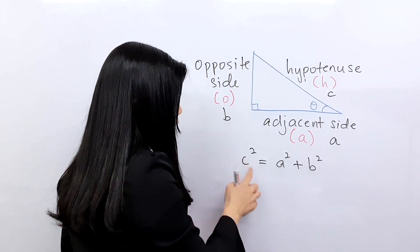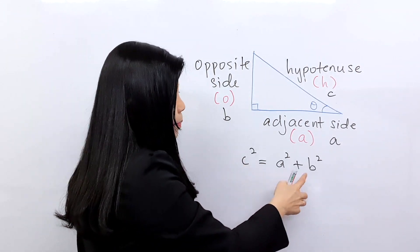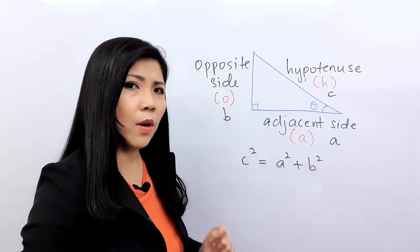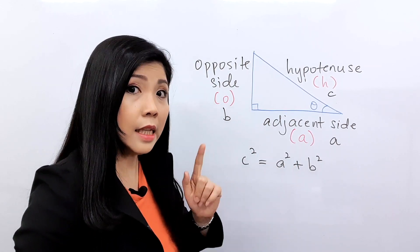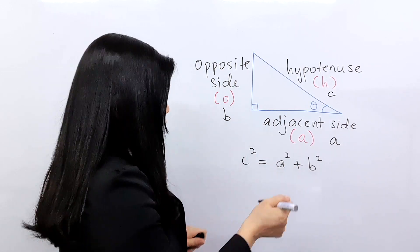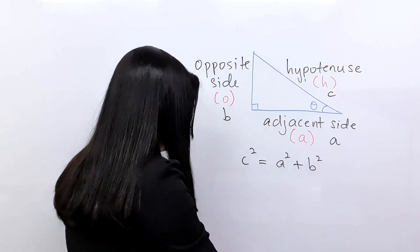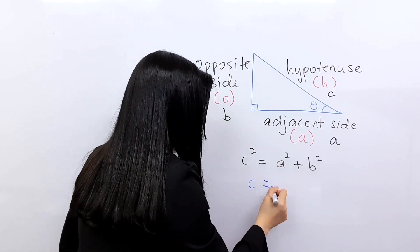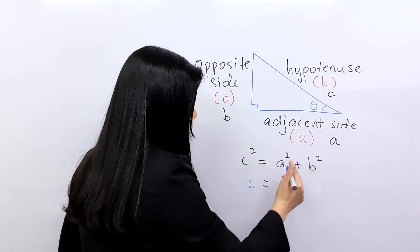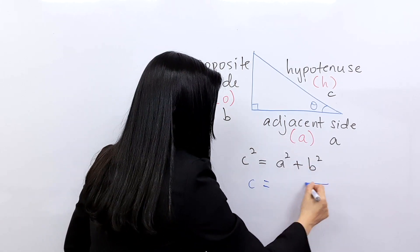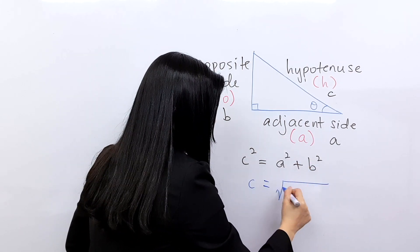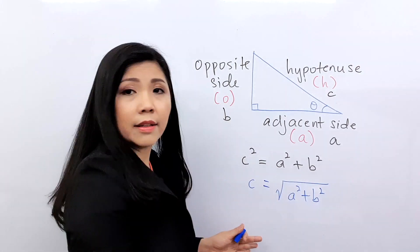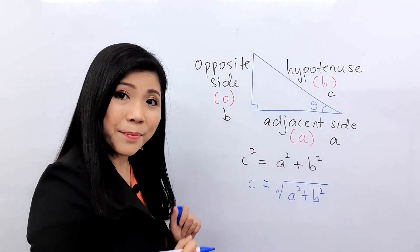So C squared equals A squared plus B squared. If I just want to find C, it's very easy. I move the square over to the right-hand side and it becomes one big square root. So C equals the square root of A squared plus B squared.